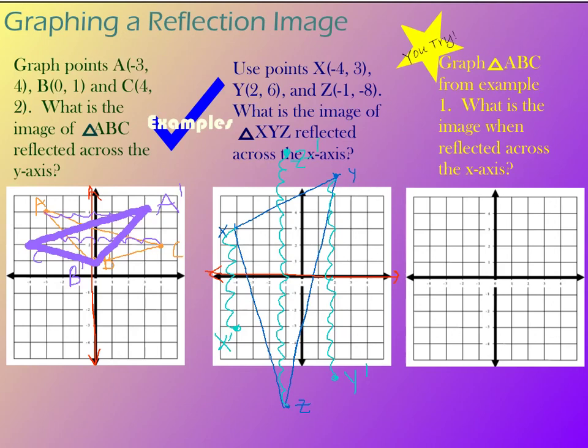So what I've done is I've reflected each of my three corners of my triangle. So now I just need to go back and I need to connect those dots. So there's my new triangle X prime, Y prime, Z prime. And that is the reflection of the original darker blue triangle X, Y, Z when it has been reflected over the X axis. So there's a U-try for you. And then that's it for this video.